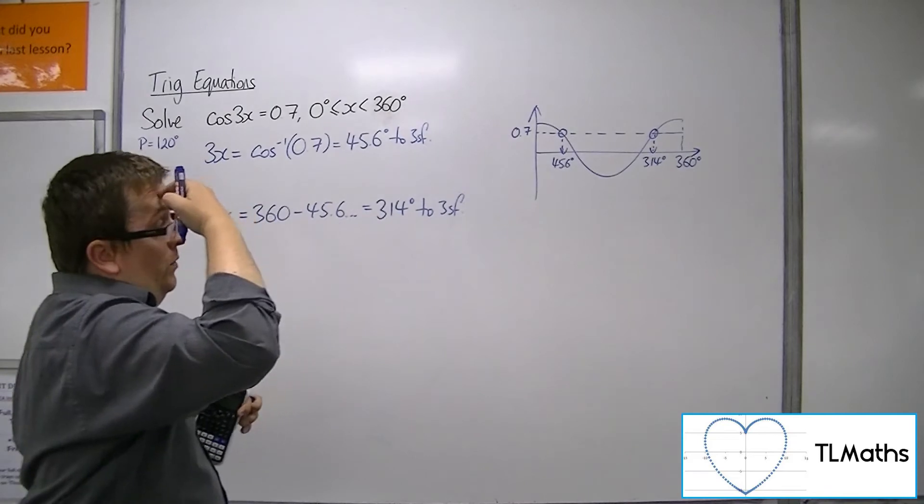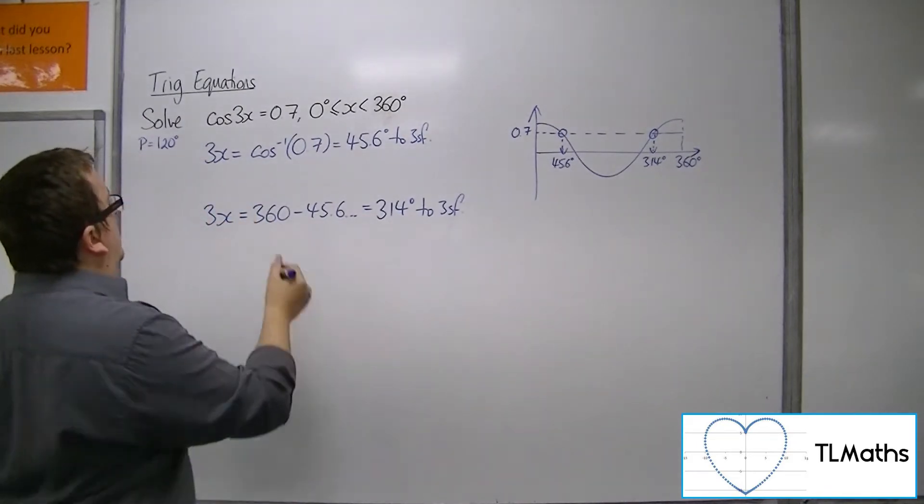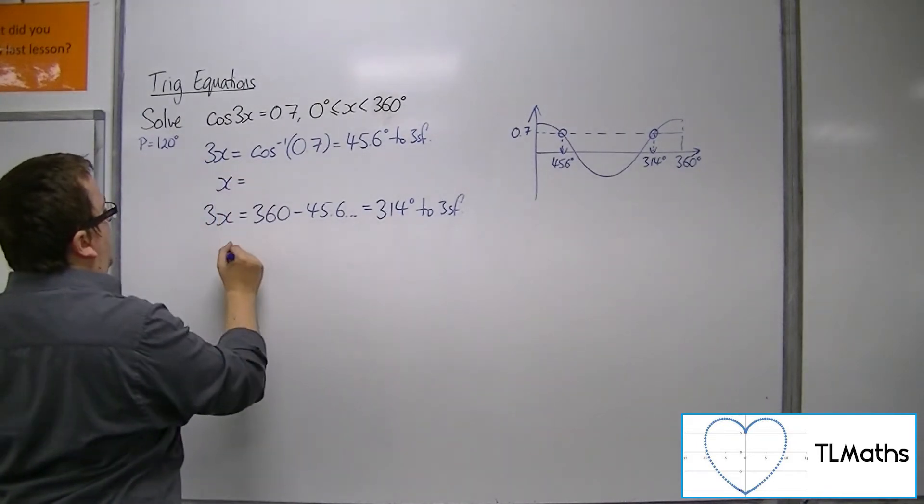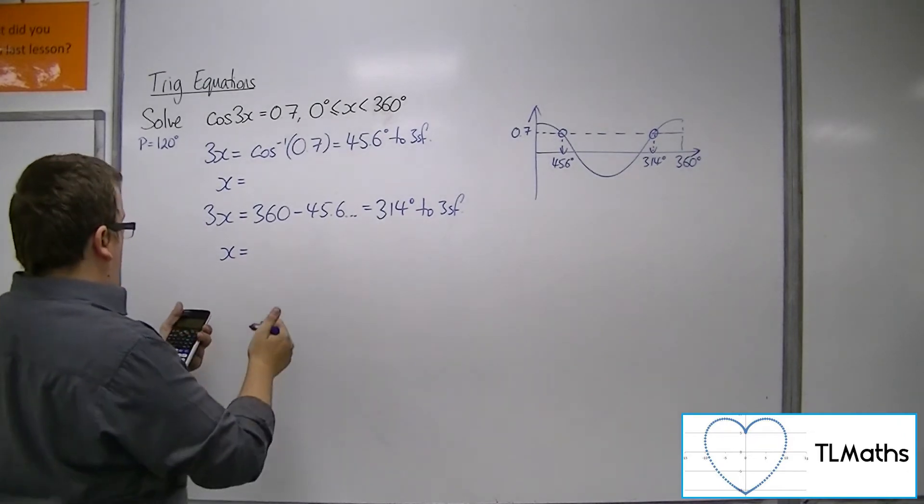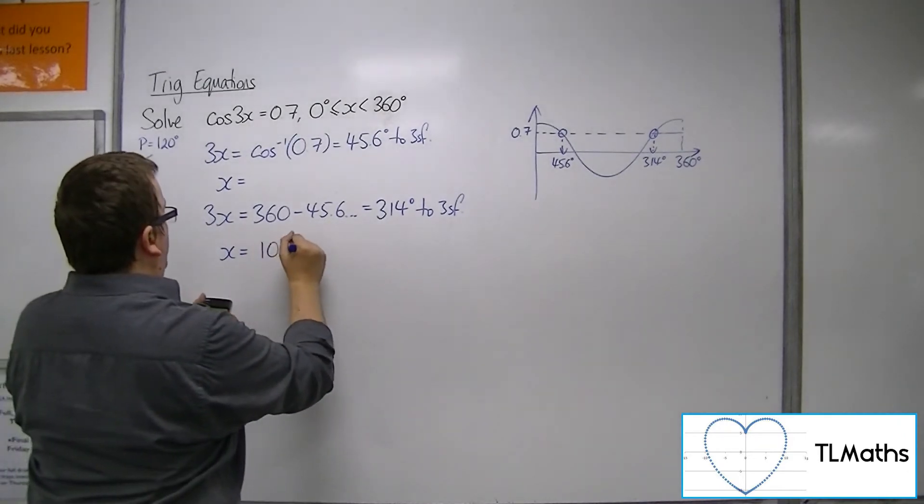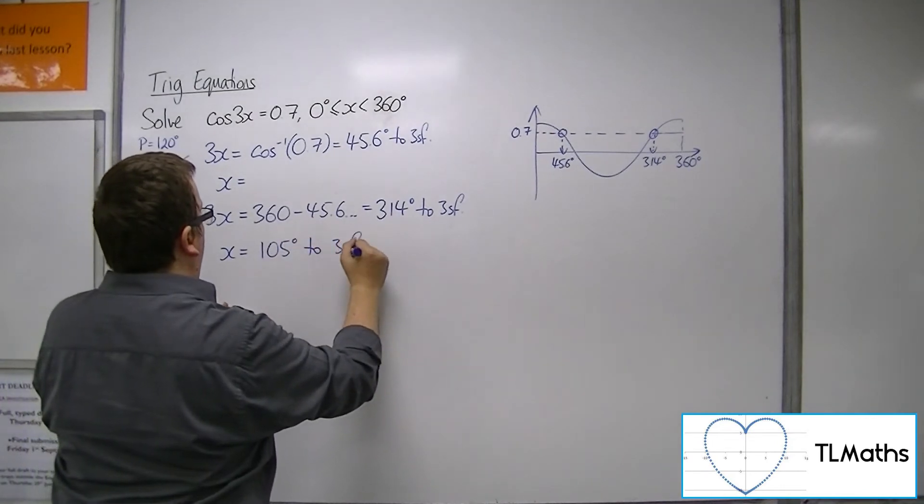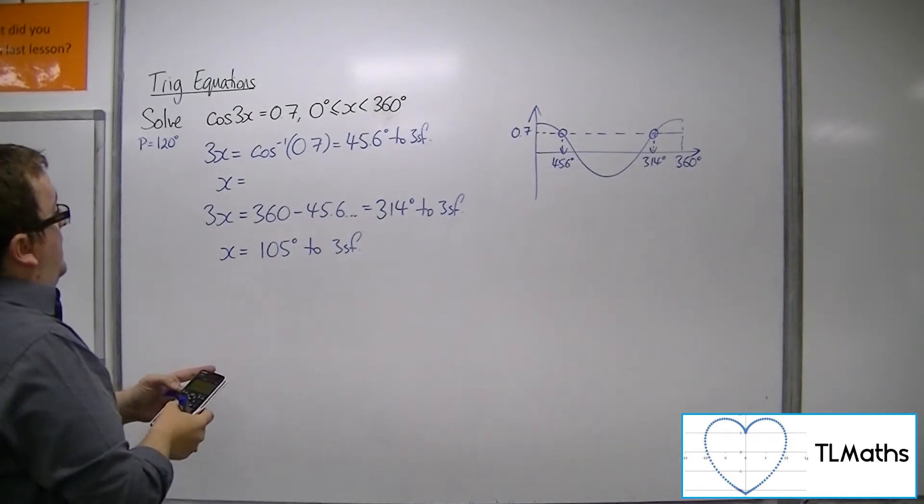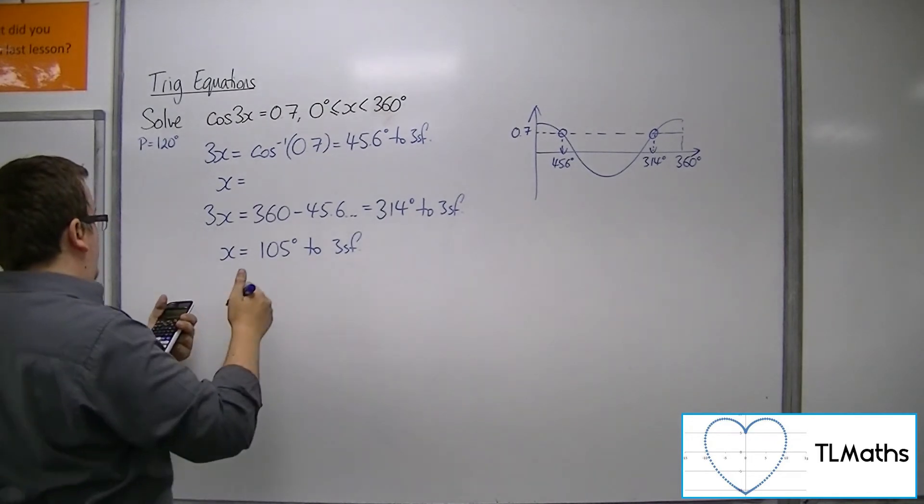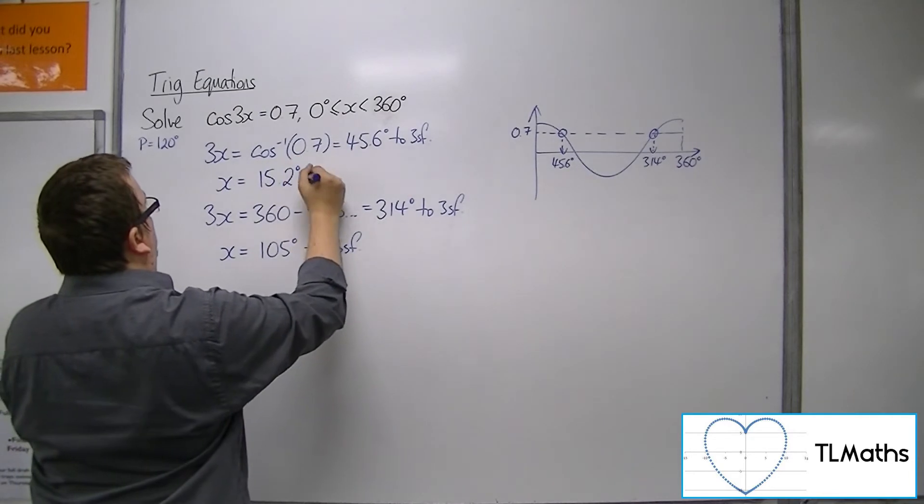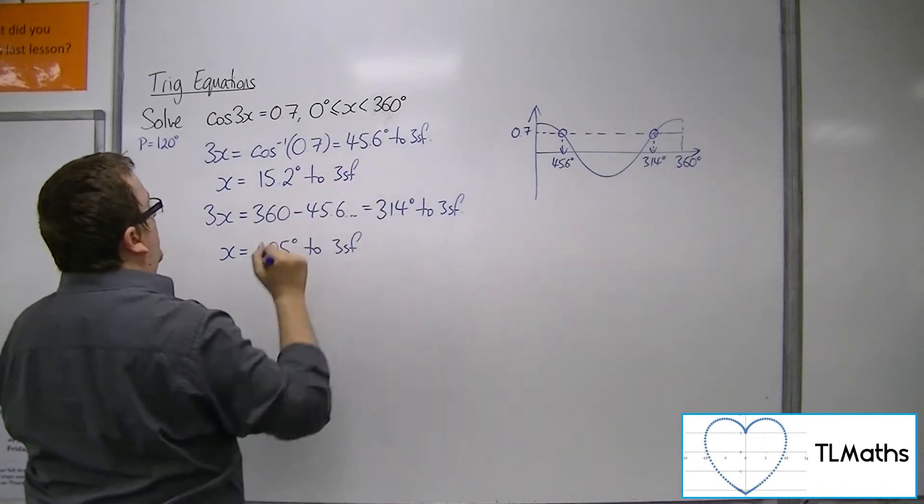So now we want to apply the transformation. So dividing both sides by 3, I get 105 degrees to 3 sig fig for that one, and then inverse cos of 0.7 divided by 3 is 15.2 degrees to 3 sig fig for that one.